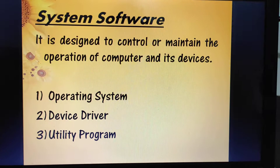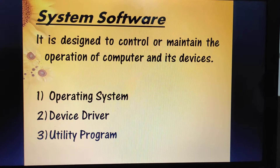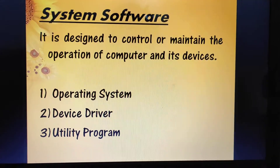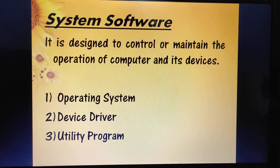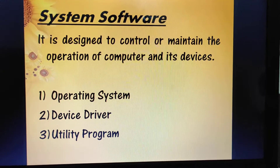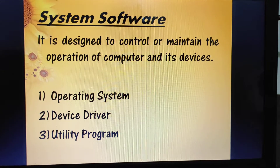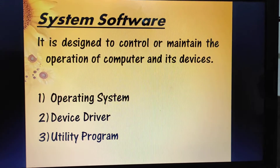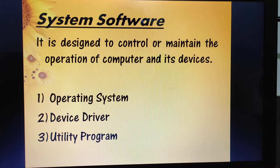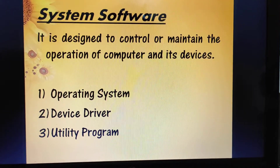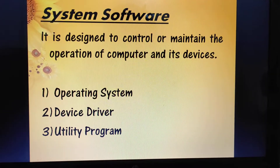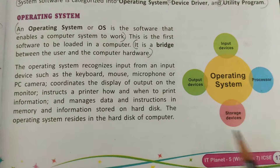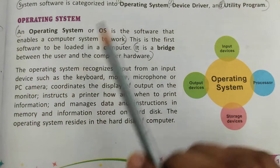Next is system software — it is designed to control or maintain the operation of a computer and its devices. System software is categorized into operating system, device driver, and utility programs.